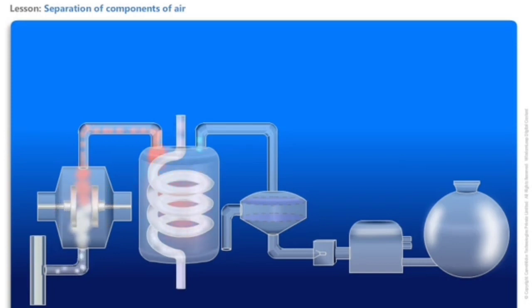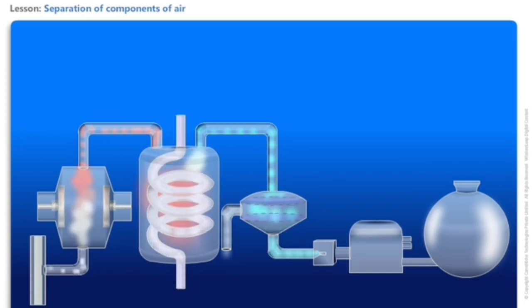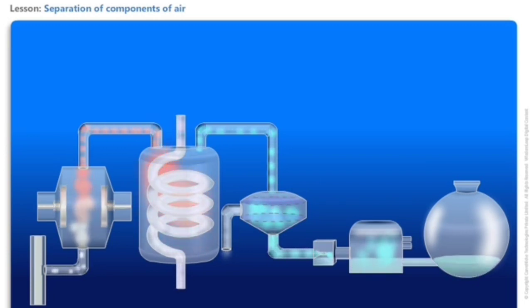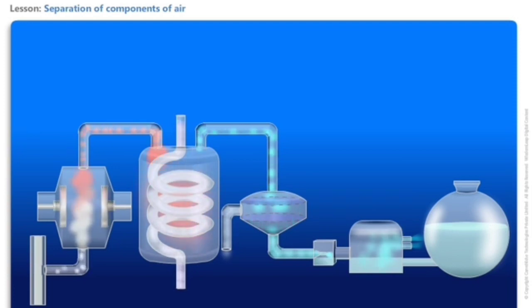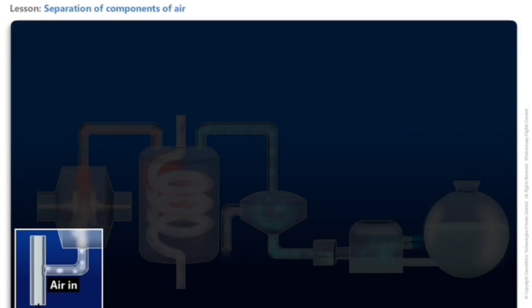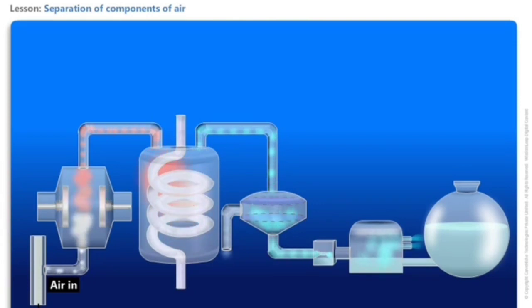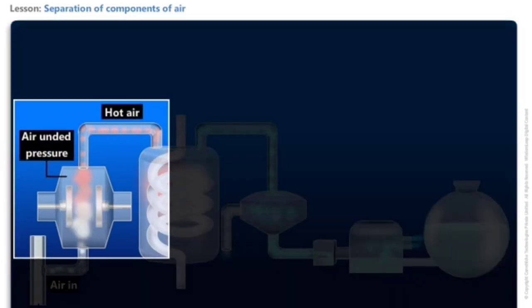How can we separate different components of air? Air is a mixture of several gases that can be separated by fractional distillation. Air is first passed through a filter to remove impurities like dust particles. Filtered air is then passed through a compressor and compressed to very high pressure, around 200 atm.